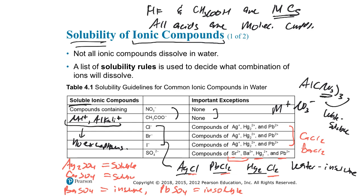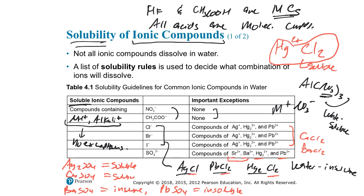Mercury is interesting to note. Mercury forms salts with a 2+ charge — Hg²⁺ — so HgCl₂ exists and is water-soluble. However, the Hg₂²⁺ cation gives Hg₂Cl₂, which is insoluble. It's only the Hg₂²⁺ cation that forms insoluble halide compounds. So HgCl₂ is soluble, but Hg₂Cl₂ is insoluble.